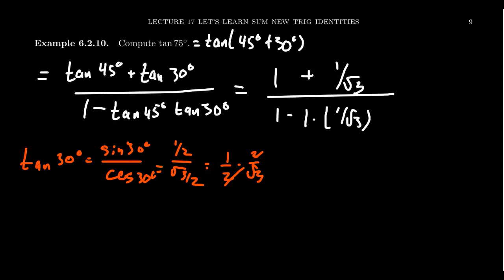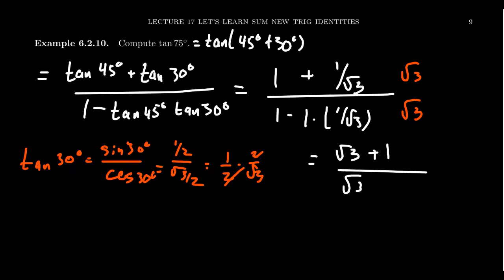I don't have a problem with a square root in the denominator, but I do have a problem with fractions inside fractions, so I'm going to clear the denominators by multiplying through by the square root of 3. Distributing: root 3 times 1 gives root 3, and 1 over root 3 times root 3 is just 1. So you get root 3 plus 1 on top, and root 3 minus 1 on the bottom — tangent of 75 degrees equals root 3 plus 1 over root 3 minus 1.